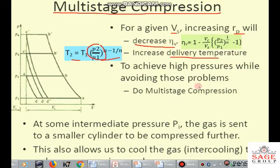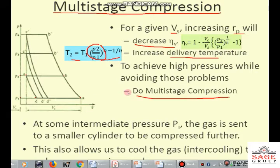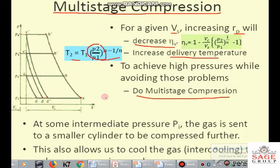Now, to achieve high pressure while avoiding those problems, we use multi-stage compression. From this PV diagram, we can see there are three cycles. Cycle A-B-C-D is used if we have to increase the pressure from P1 to P2. If we have to increase the pressure further up to P3, then we follow the cycle A-B'-C'-D'. And for achieving the pressure P4, we follow the cycle A-B''-C''-D''. The diagram also shows the clearance volume Vc and the swept volume Vs. At some intermediate pressure P3, the air is sent to a smaller cylinder to be compressed further.